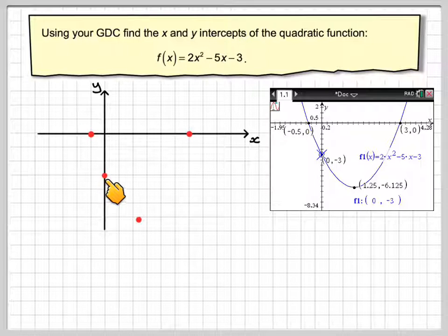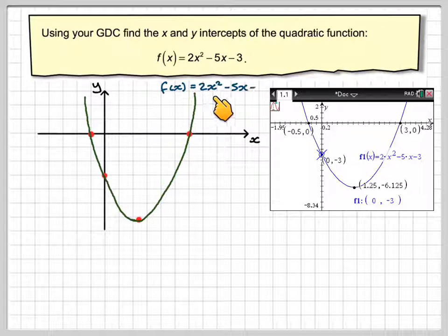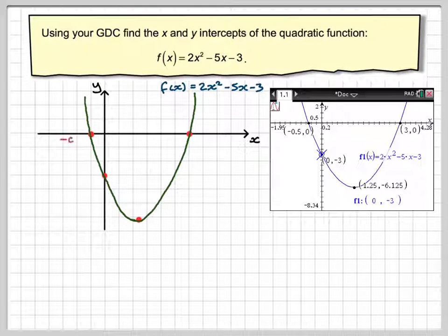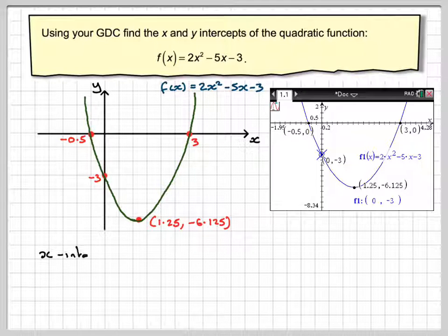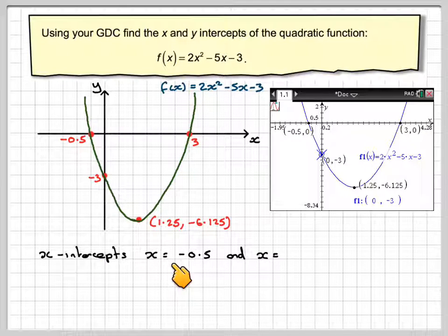Okay, and then mark on the y intercept, join the points up with a nice smooth curve, label the quadratic, and then perhaps mark on this -0.5, that is 3, that is -3, and the coordinates at that point are (1.25, -6.125).